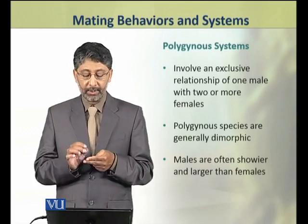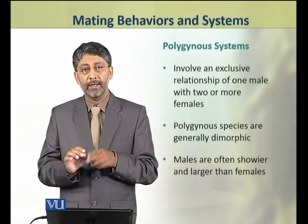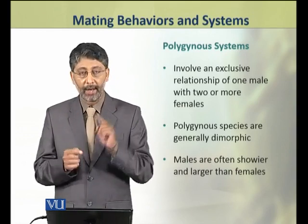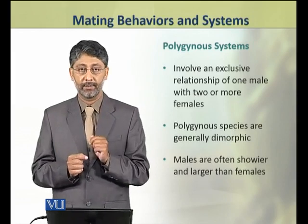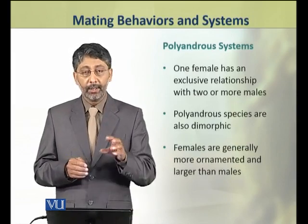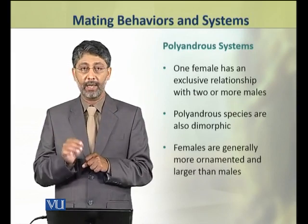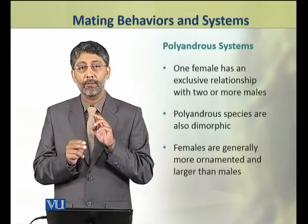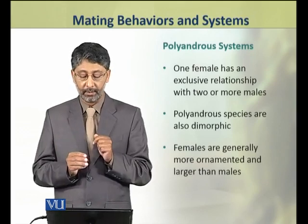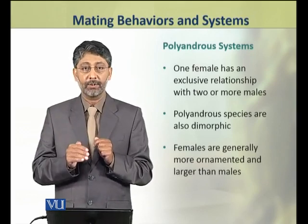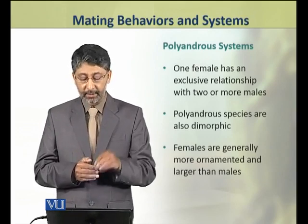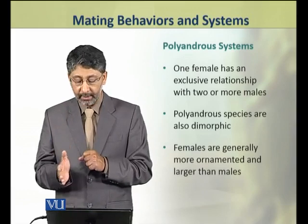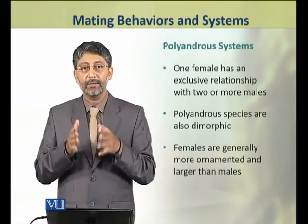Polygynous species are generally dimorphic, in which the males are often showier and larger than females. In polyandrous systems, one female has an exclusive relationship with two or more males. Polyandrous species are also dimorphic, but here the females are generally more ornamented and larger than males.